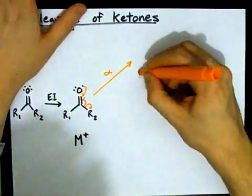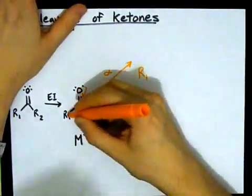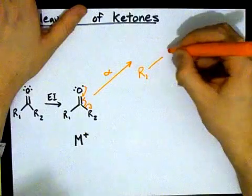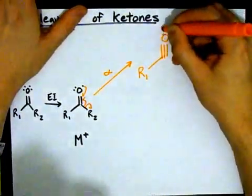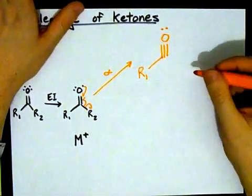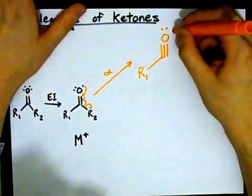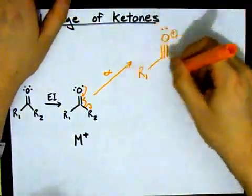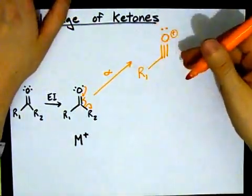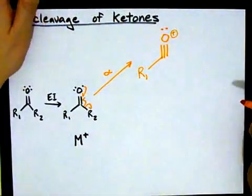In any case, what you're left with is your alkyl group R1 connected to the carbonyl carbon, which is now triple bonded to the oxygen. It still has those two electrons, but it now has a formal charge of plus one. This is a fragment that will be detected in your mass spectrometer because it has that positive charge.